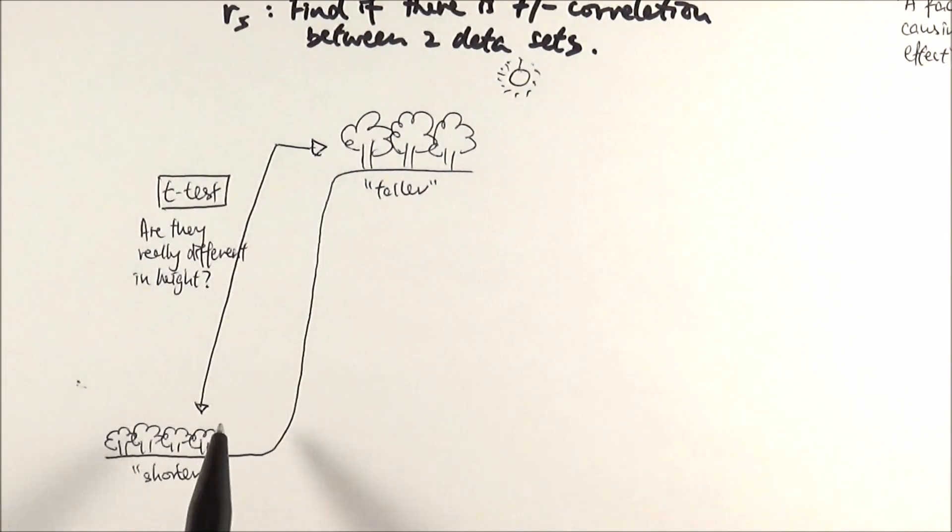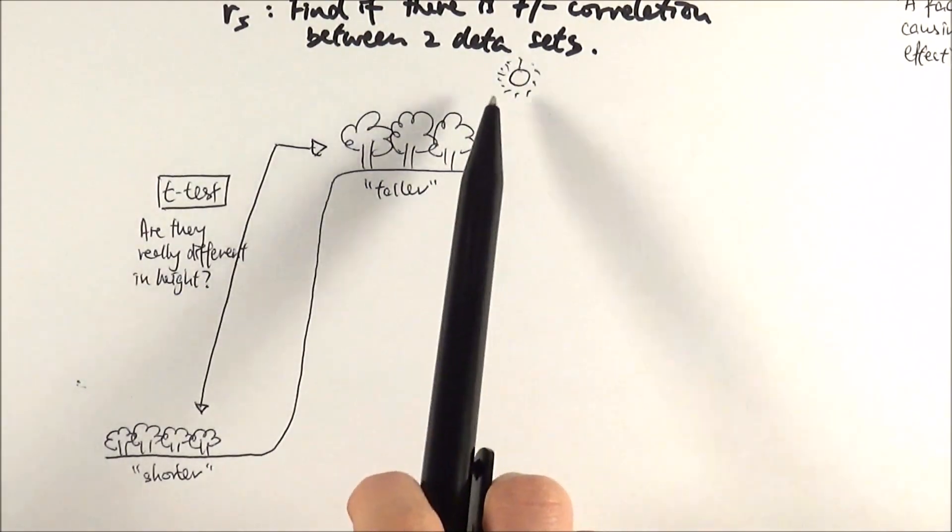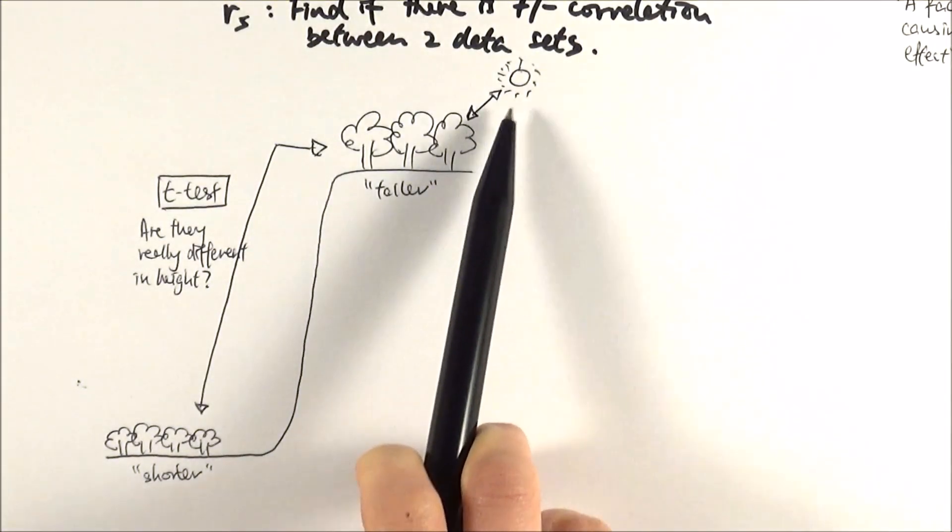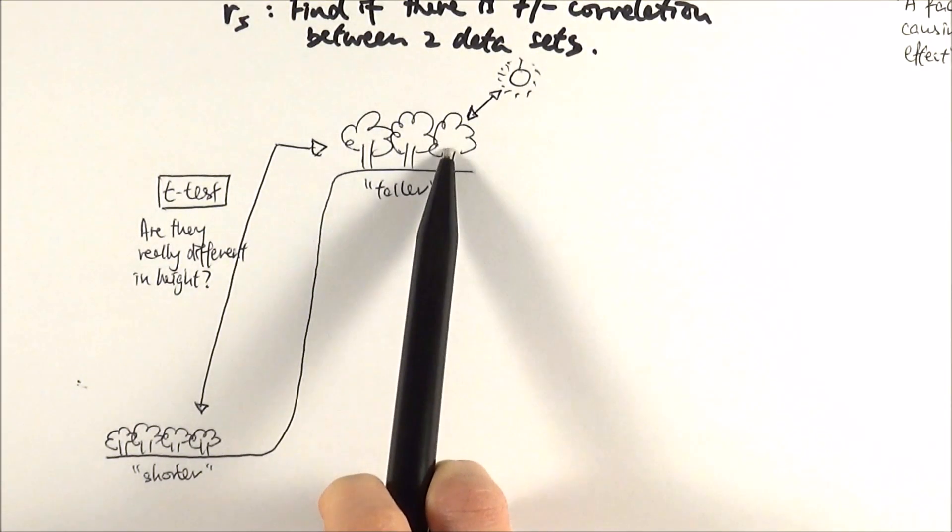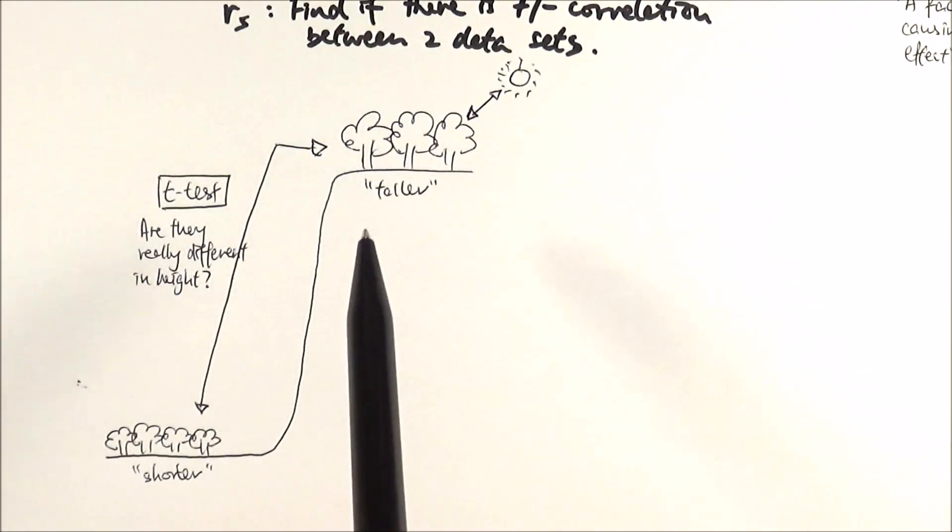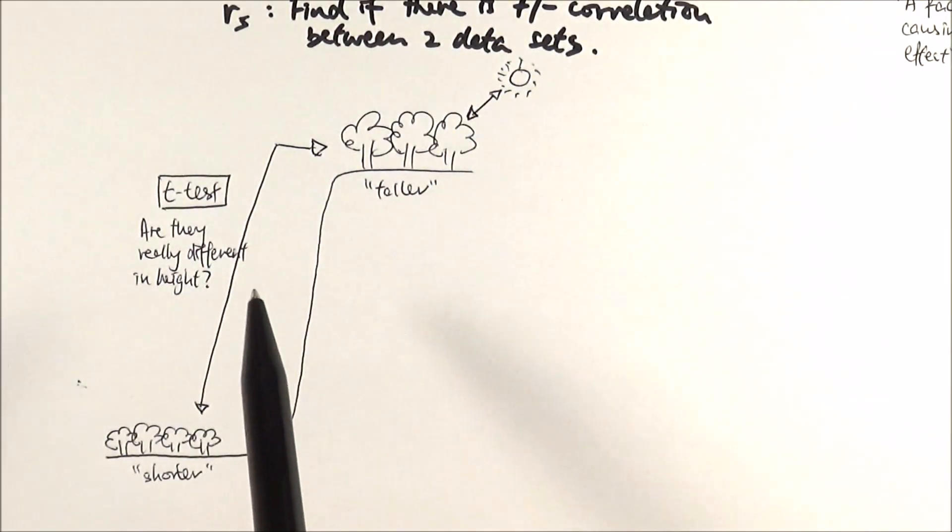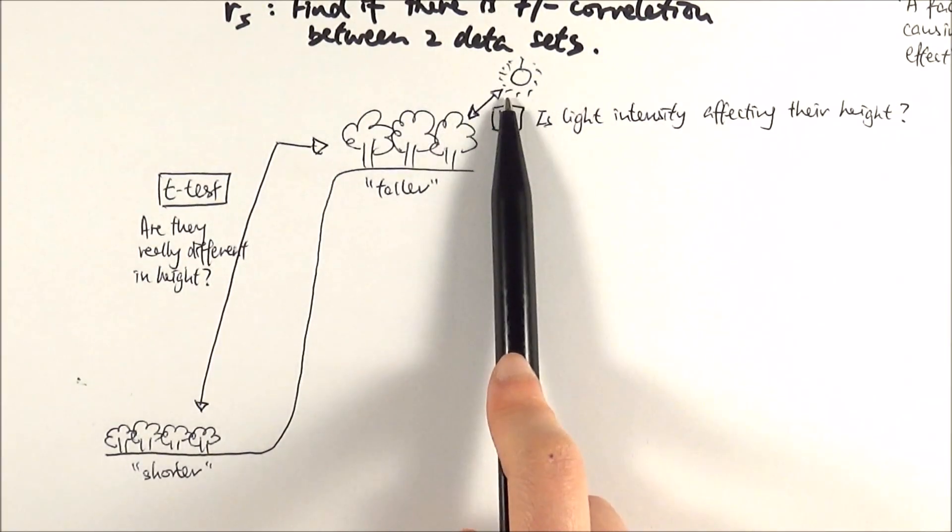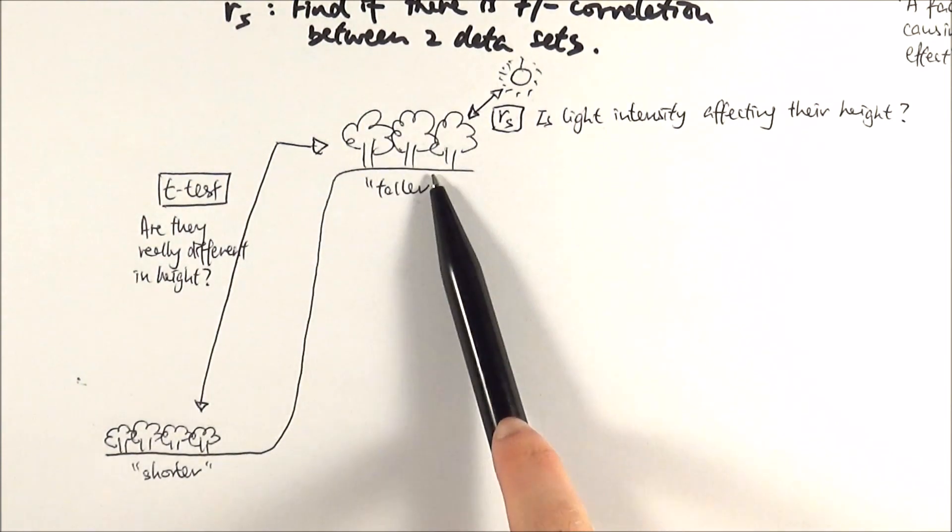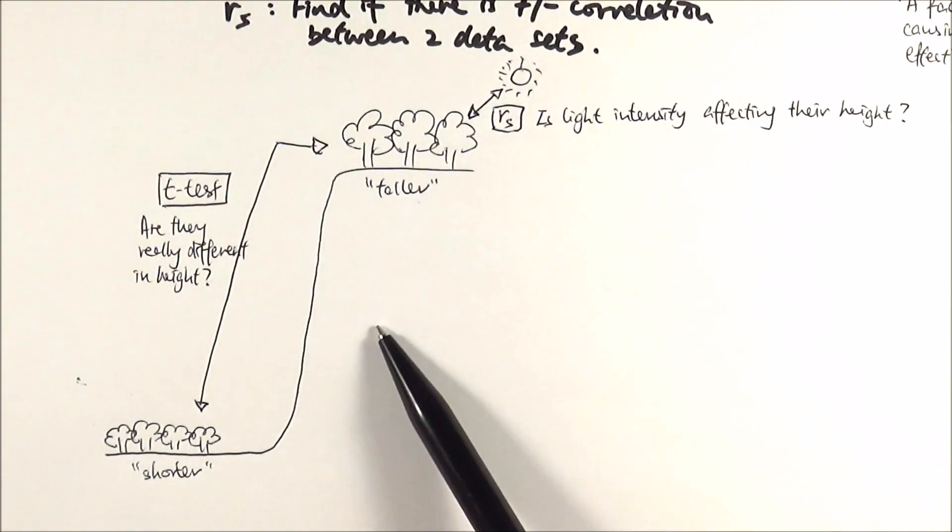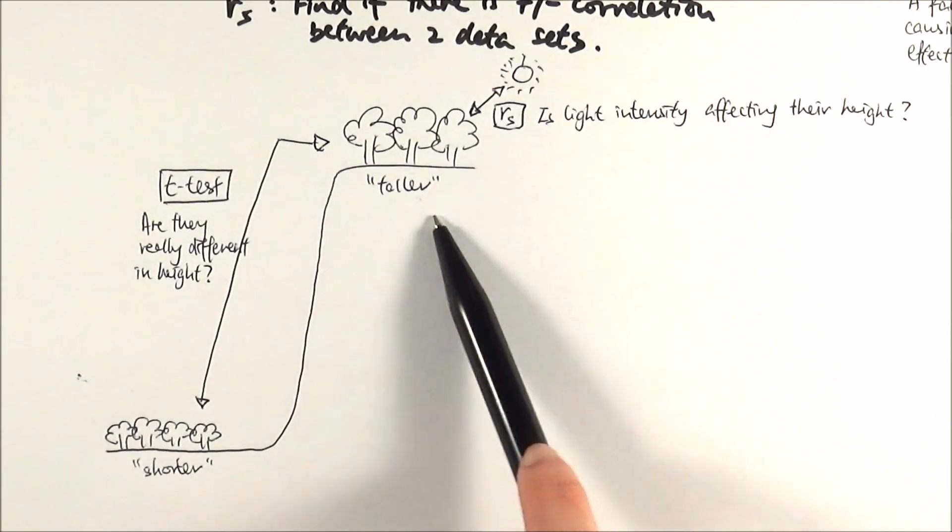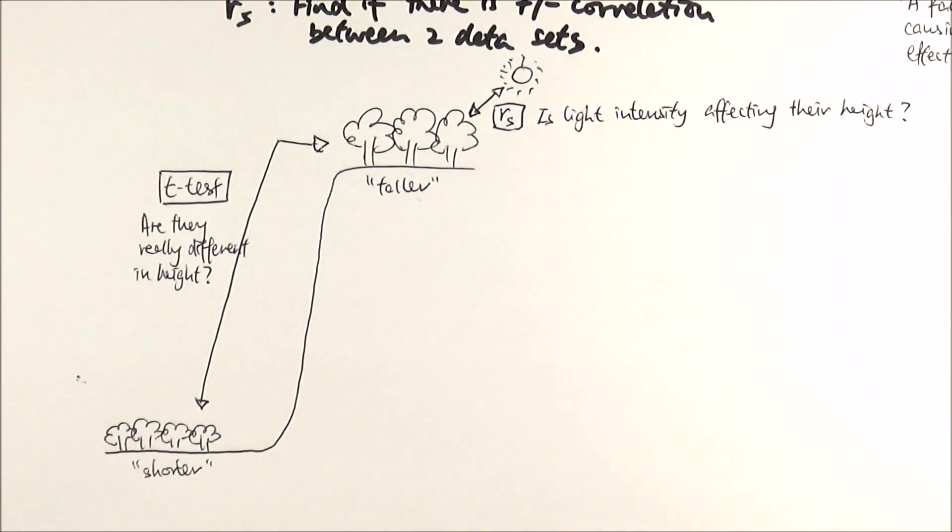Is it because they're higher up? Maybe because of soil difference? Or the sun? If you suspect there might be a relationship or correlation between the light intensity and the height of the trees, you can then do a Spearman's rank correlation coefficient test to find out if that is true. If you find out there's no correlation there but you know because of t-test that something is affecting it, then perhaps you can do another Spearman's rank coefficient test between the height and perhaps soil nutrients concentrations, availability of water, or oxygen, etc. That's how we use the two tests.